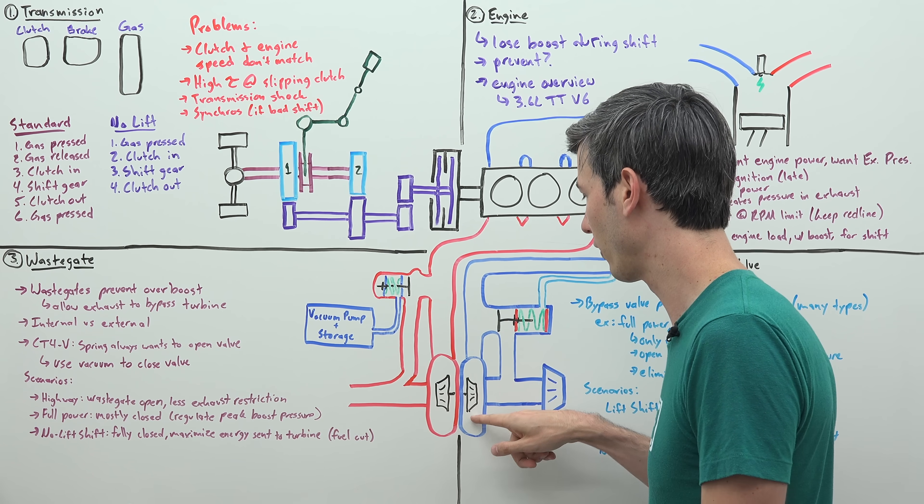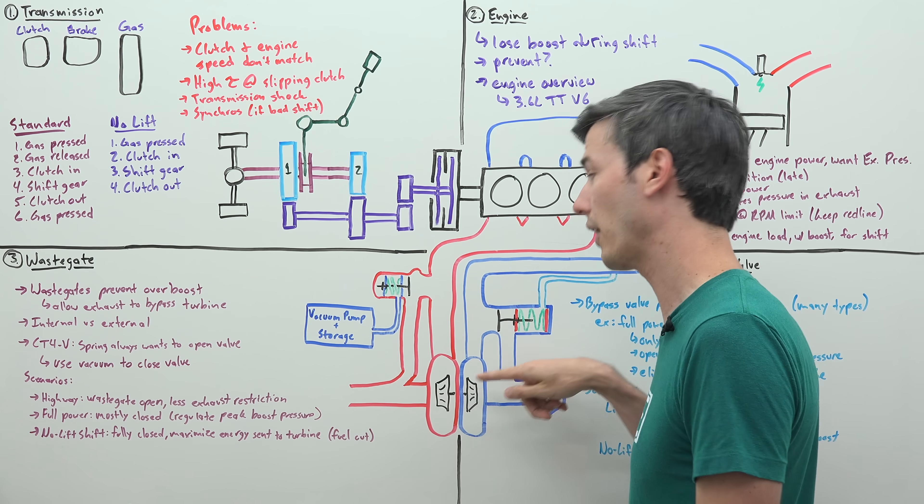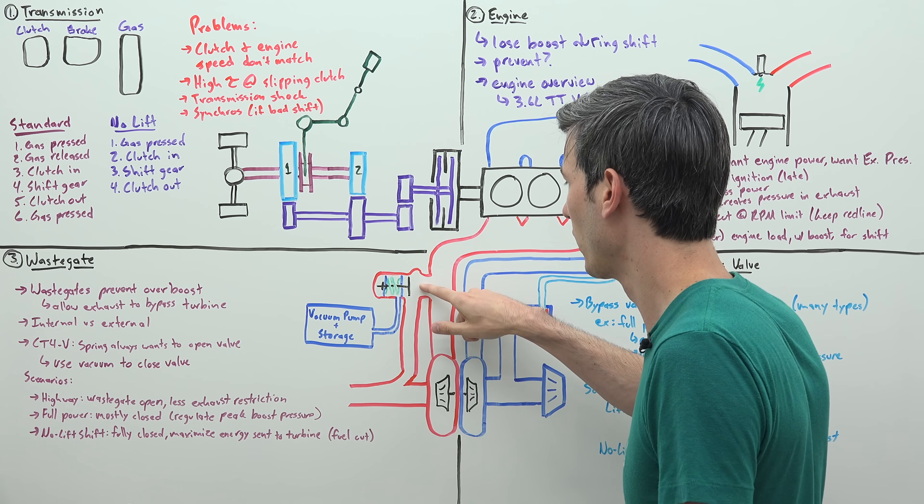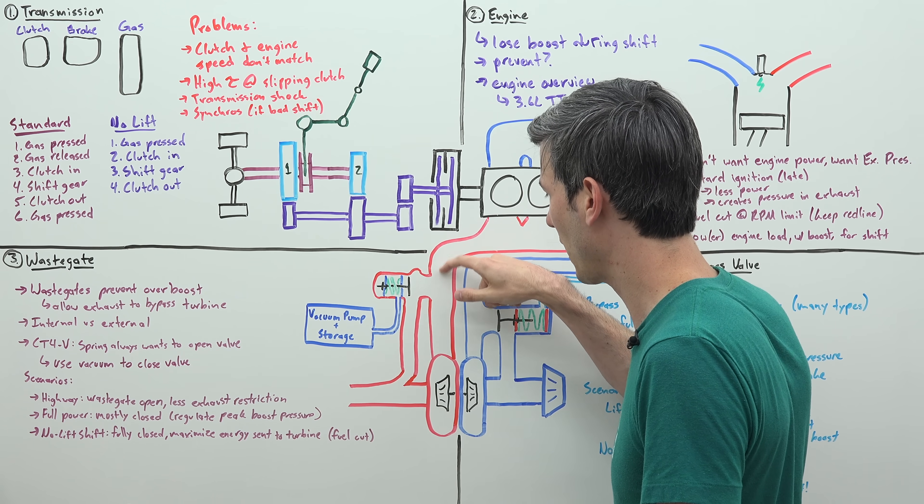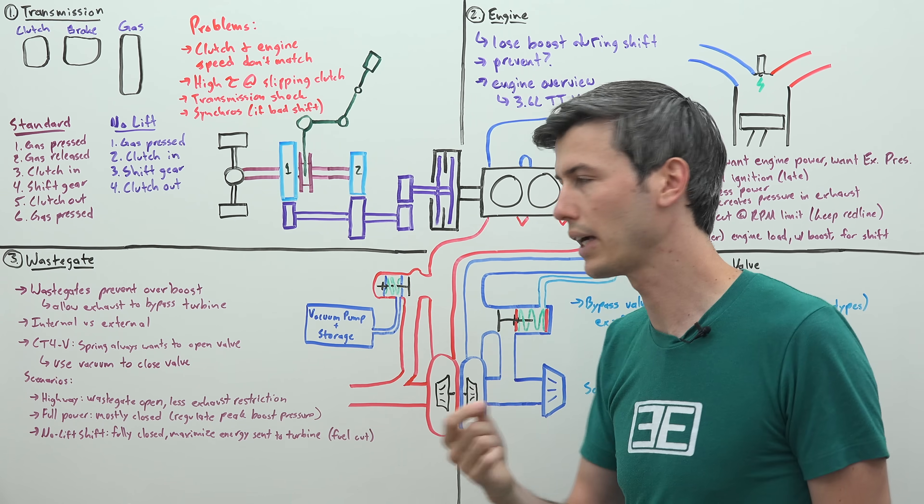And so basically what happens is you have exhaust, it's spinning this turbine, that's giving you boost, it's pulling in more and more air, and that means you have more exhaust which spins faster, which means you get more air, and that cycle just continues, right? So in order to prevent this, you have a wastegate, which allows that air to bypass your turbocharger, so that you don't create additional boost.